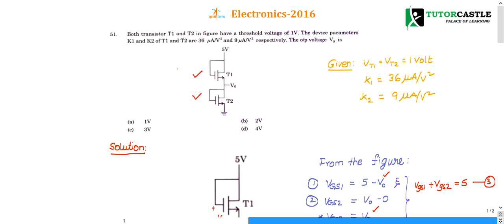From the figure, the transistors are connected back to back — they are in series. The total current will be the same throughout both transistors. Whenever transistors are connected end to end, back to back, or in series, the total current flowing through both transistors will be the same. I'll call it ID. That's point number one.